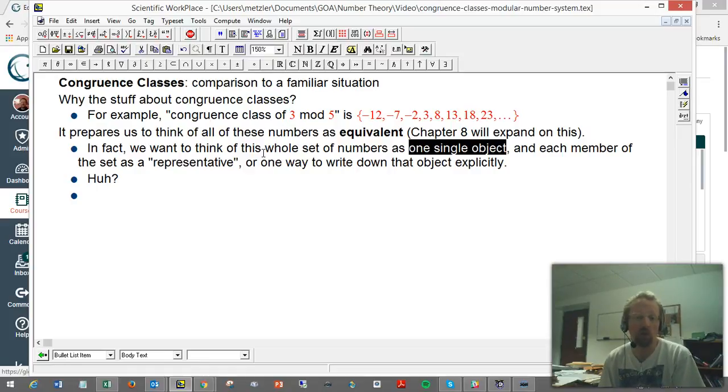Chapter 8 is really about taking it to that level of saying we're really inventing a new kind of number system. And each member of this set, each actual integer in this set, is really just a different way to write the same exact quantity when we're thinking in the mod 5 world. So, what is that about?